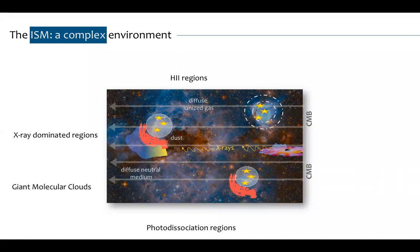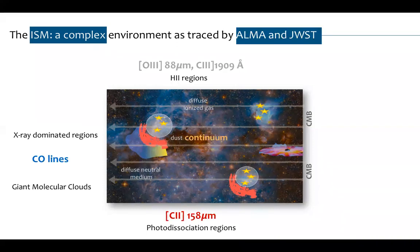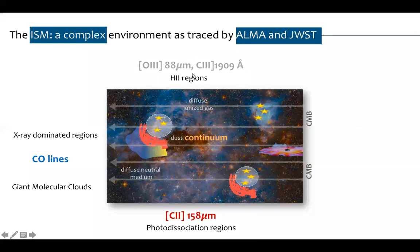We are now in the ALMA era and soon deeply into the JWST era. There are many lines to trace these gas phases. I focus on a few: the C+ line, which is the king line observed by ALMA in the high-redshift universe, coming mostly from PDRs; the oxygen 88 micron line; the C3 line, which will be easily accessible for JWST; and the CO lines — the most targeted molecular lines in general.